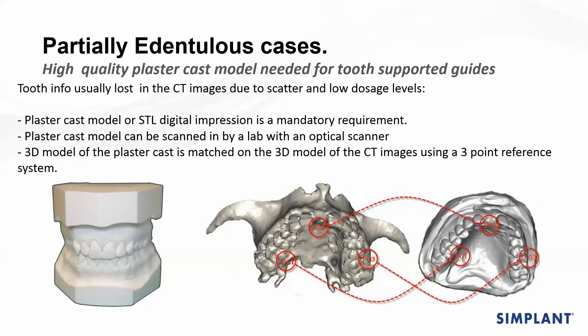We use a three-point referencing system so we need to clearly identify three points in both the CBCT scan — which is just bone and teeth — and the STL file, which is tissue and teeth. Our only reference points are the teeth alone. The more teeth we have over a larger span to create a triangle tripod effect, the more accurate the merging of the files will be. Nice clear impressions are vital — no blowholes, no chipped teeth, and no drag. Silicone impressions are definitely what we need.